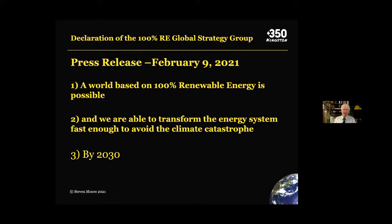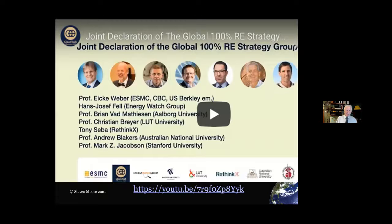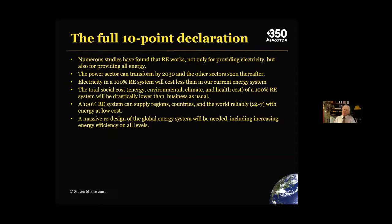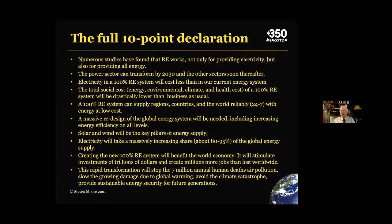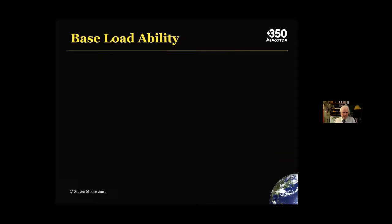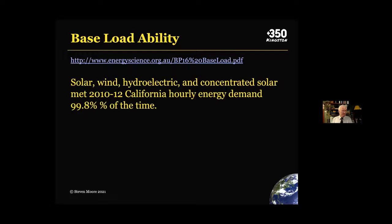There was a declaration just last week from the Renewable Energy Global Strategy Group making three points: a world based on 100% renewable energy is possible; we are able to transform the entire energy system fast enough to avoid climate catastrophe, and we can do it by 2030. Within six months during World War II we transformed our industrial economy, and we can do it again. Critics of renewable energy say the sun doesn't shine all the time and the wind doesn't blow all the time, but they forget we have batteries, and the wind is always blowing somewhere. Based on an article in Energy Science and work by Mark Jacobson, solar, wind, hydroelectrics, and concentrated solar power met California's hourly demand 99.8% of the time.